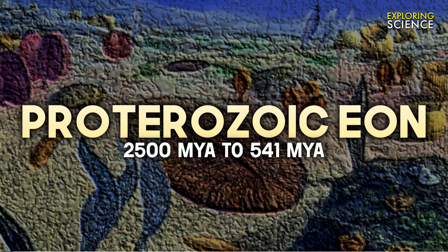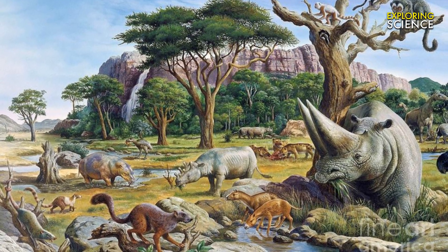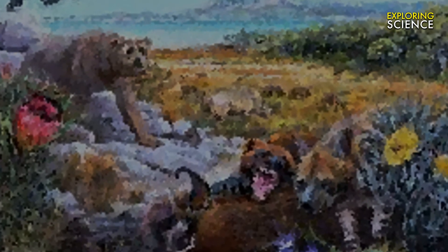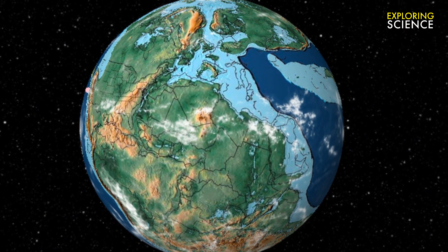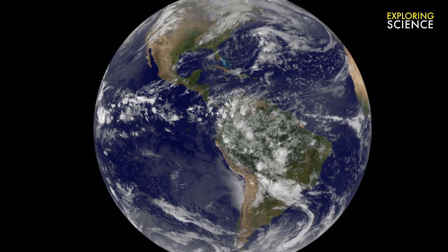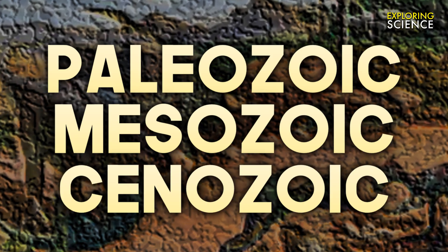The Proterozoic Eon extended from 2,500 million years to 541 million years ago, lasting about 2 billion years. The Phanerozoic Eon is the current eon in the geologic timescale, and the one during which abundant animal and plant life has existed. It covers roughly 541 million years. During this period, continents drifted about, eventually collected into a single landmass known as Pangea, and then split up into the current continental landmasses. It is divided into three eras: the Paleozoic, Mesozoic, and the Cenozoic.